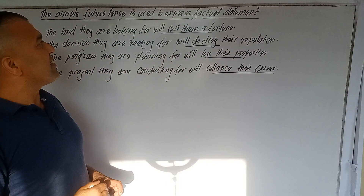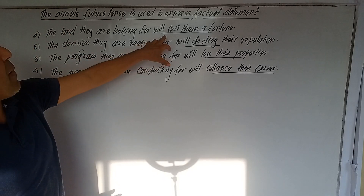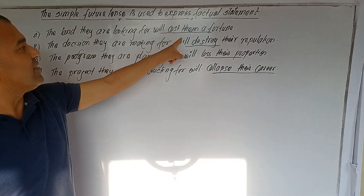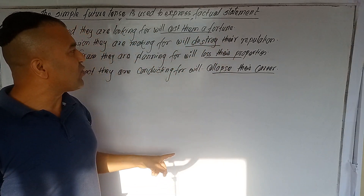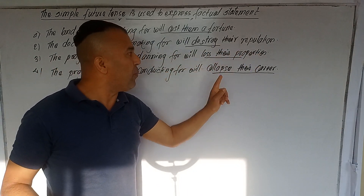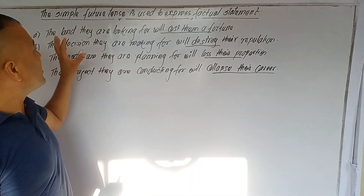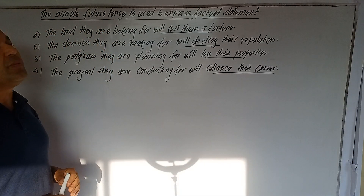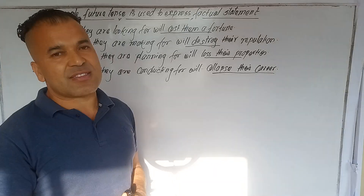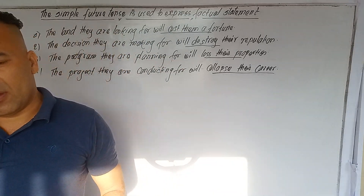The simple future tense is used to express factual statements: the land will cost them a fortune, will destroy their reputation, will lose their property, will collapse their career. Alright, this is the condition where we use simple future tense. Simple future tense is used to express factual statements.